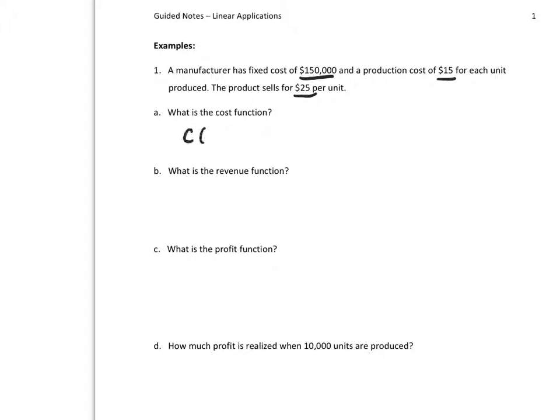So the cost function is made up of a variable cost and a fixed cost. So my variable cost is 15 times X, 15 times each unit, plus that one-time fixed cost of $150,000.